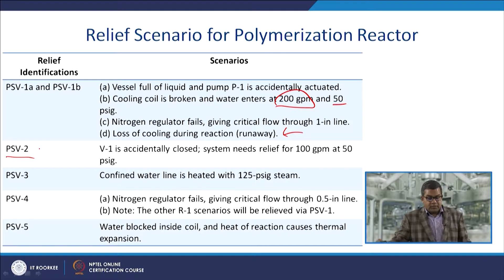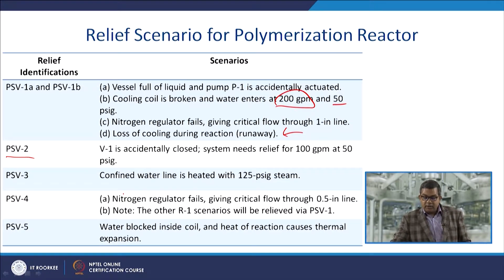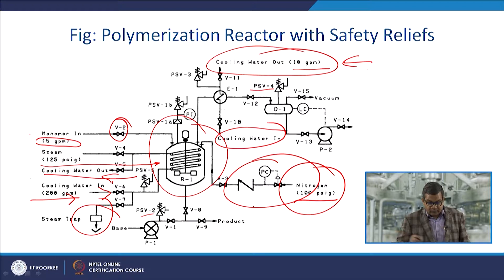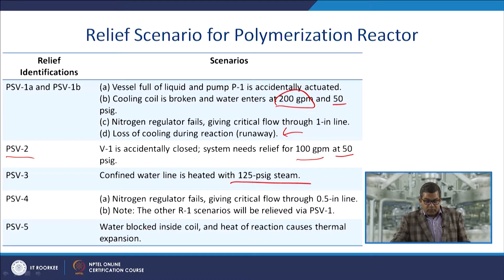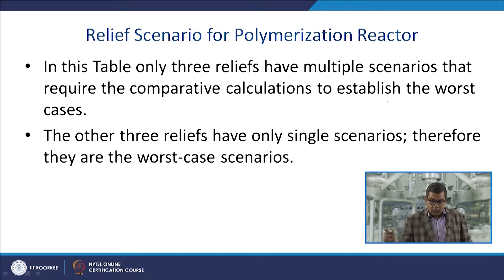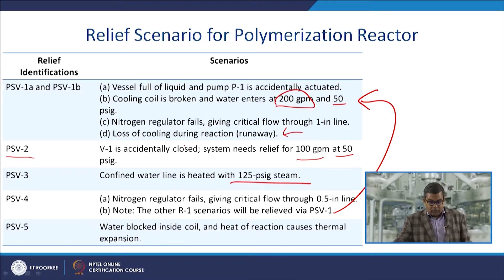Additional scenarios include PSV-2 — valve-1 accidentally closed requiring relief for a specified quantity; PSV-4 — nitrogen regulator failure giving critical flow through a 0.5-inch line; reactor-1 scenario relieved via PSV-1; and PSV-5 — water blocked inside the coil where heat of reaction causes thermal expansion. These represent the full set of relief scenarios for this reactor.